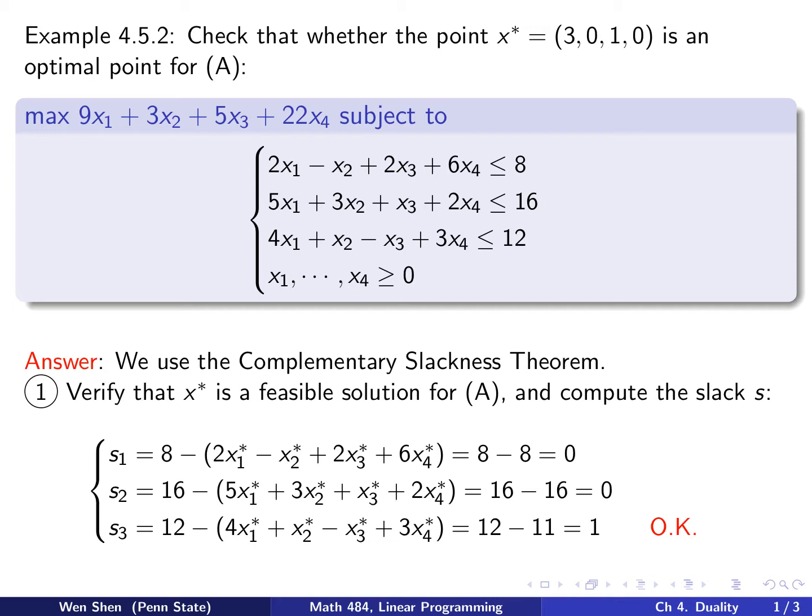So step one. The first thing, I need to verify that x star is a feasible solution. Because if it's not feasible, then there's nothing to do. And at the same time, as I'm checking if it is a feasible solution, I can also compute the slack at the same time. Let's do it.